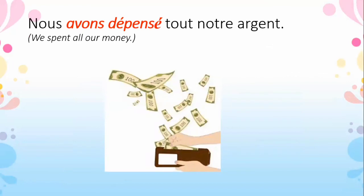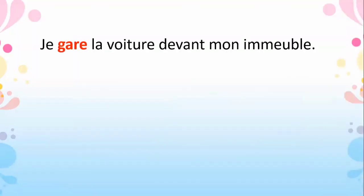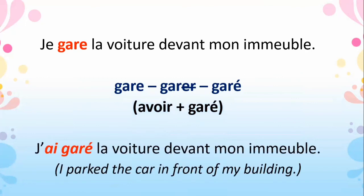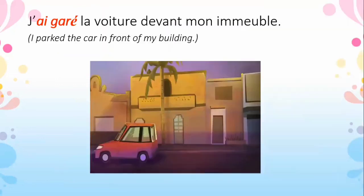Next: 'Je gare la voiture' — I park the car in front of my building. 'Garer' is a regular -er ending verb, so cut the -er and add é. Avoir plus past participle gives: j'ai garé la voiture devant mon immeuble — I parked the car in front of my building.